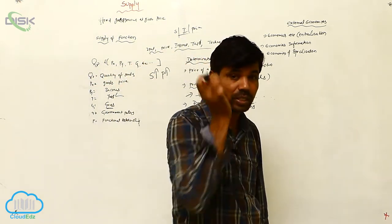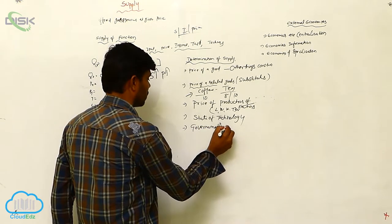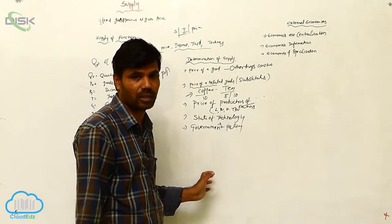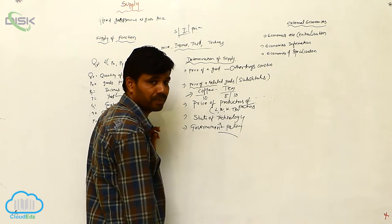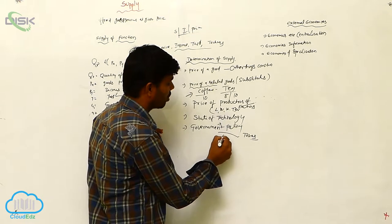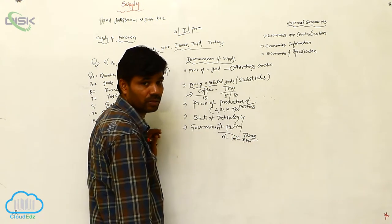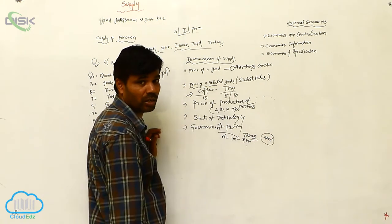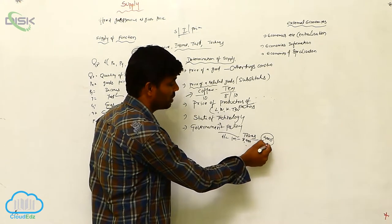Next is government policies. Government policies are one of the main elements playing a role in supply — through taxes on commodities and the benefits collected by the government. For example, with electronic goods: suppose an MI mobile is priced at 8,990 rupees in the market, but the actual original cost is only 4,000 rupees. The remaining 5,000 rupees accounts for transport, taxes, and excise duties.